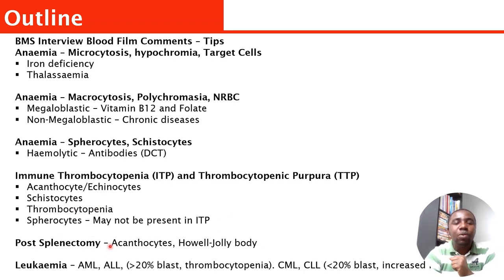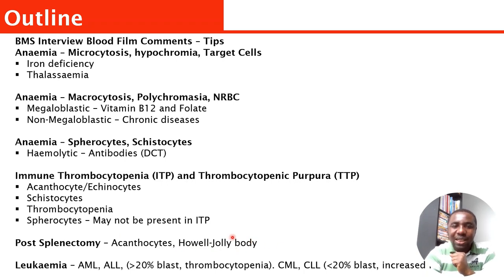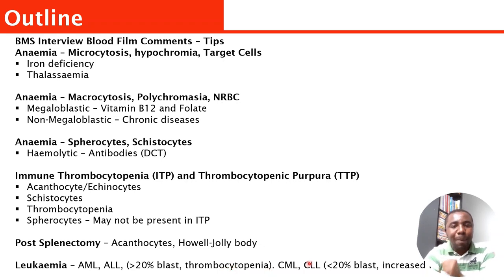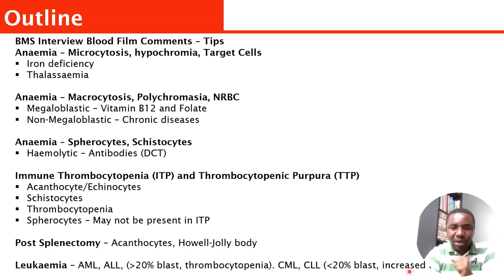Another likely question they will give you is post-splenectomy. When somebody's spleen has been removed, you are likely to see a high number of acanthocytes and Howell-Jolly bodies. Once you see that, tell them post-splenectomy. Another thing they are likely to show you will be leukemia, whether AML or ALL. When it is acute, blast cells will be greater than 20%. When it is chronic, whether myeloid or lymphocytic leukemia, you are going to see less than 20% blast, and there will be a raised total white cell count.